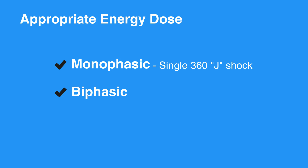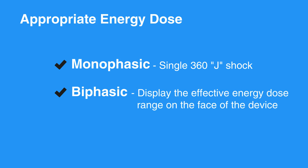Biphasic defibrillators use a variety of waveforms and have been shown to be more effective for terminating a fatal arrhythmia. When using biphasic defibrillators, providers should use the manufacturer's recommended energy dose. Many biphasic defibrillator manufacturers display the effective energy dose range on the face of the device. If the first shock does not terminate the arrhythmia, it may be reasonable to escalate the energy delivered if the defibrillator allows it.